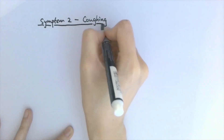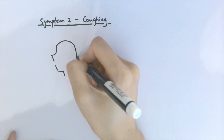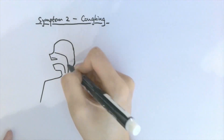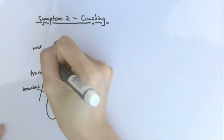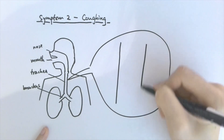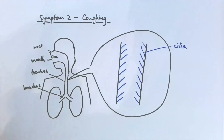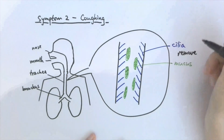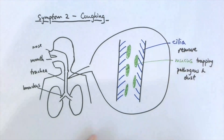Secondly, the cough. Having a cough usually implies there is something in your airway that you're trying to get rid of — usually mucus that traps pathogens and dust in your trachea and bronchi. Mucus is normally removed by cilia, which beat in a synchronised motion to move the mucus up the trachea to the throat, where you can either cough or spit it out, or swallow it to your stomach to be destroyed by hydrochloric acid.